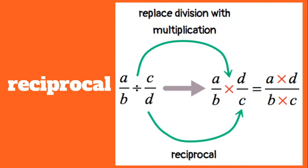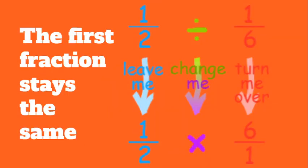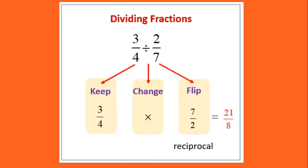Dividing fractions is interesting because you need to find the reciprocal of the second fraction — you switch it and then multiply. That word 'reciprocal' will come in handy. For example, to divide one half by one sixth, we leave one half the same, change the division symbol to a multiplication symbol, and flip one sixth to find its reciprocal: six over one. Then just multiply like normal. Here's another example: three fourths divided by two sevenths. We keep three fourths, change division to multiplication, and flip two sevenths. Three times seven is 21 and four times two is eight, giving us twenty-one eighths, which you could simplify since it's an improper fraction.